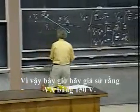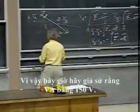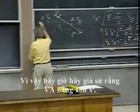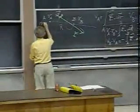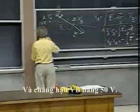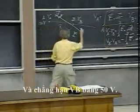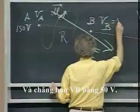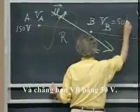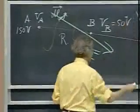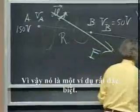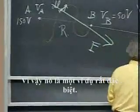Let's now make the assumption that V_A is 150 volts and that V_B is 50 volts. So it's a very specific example.